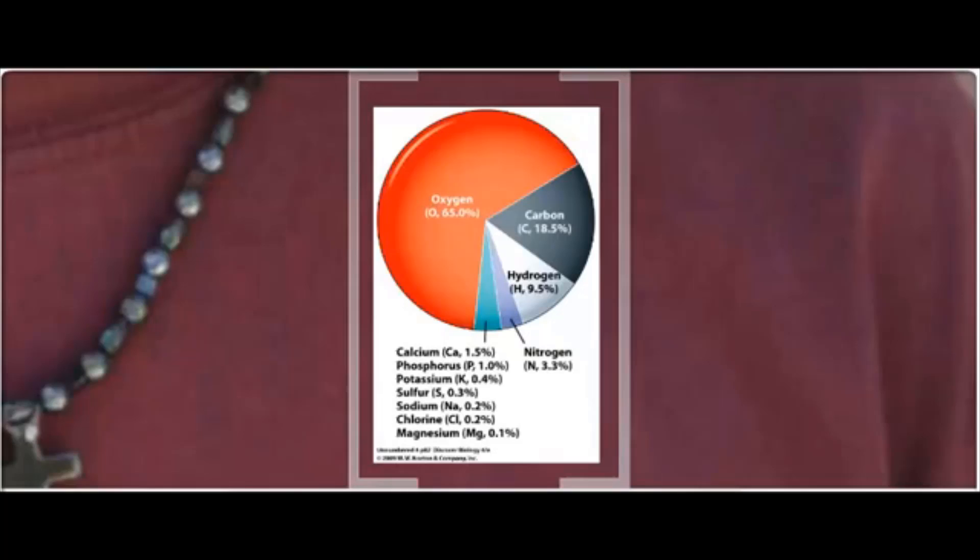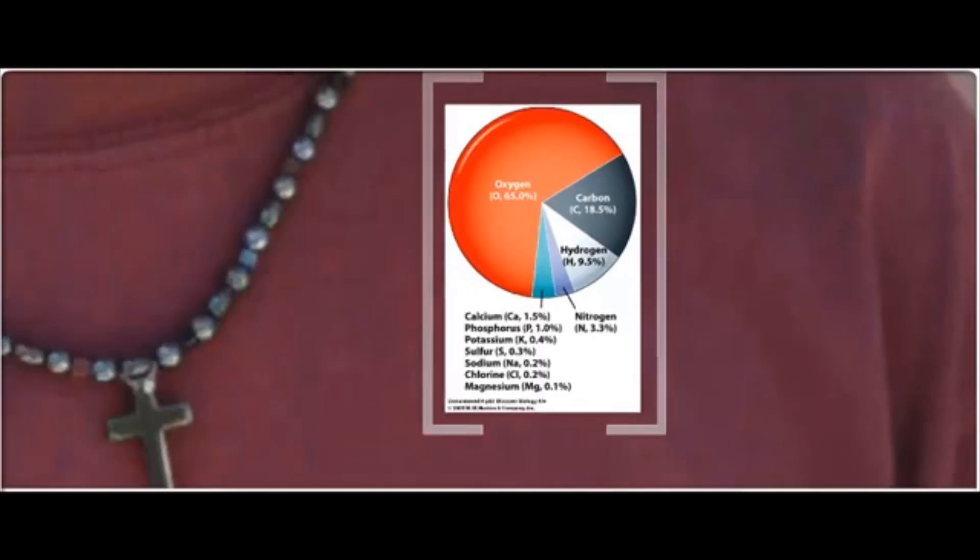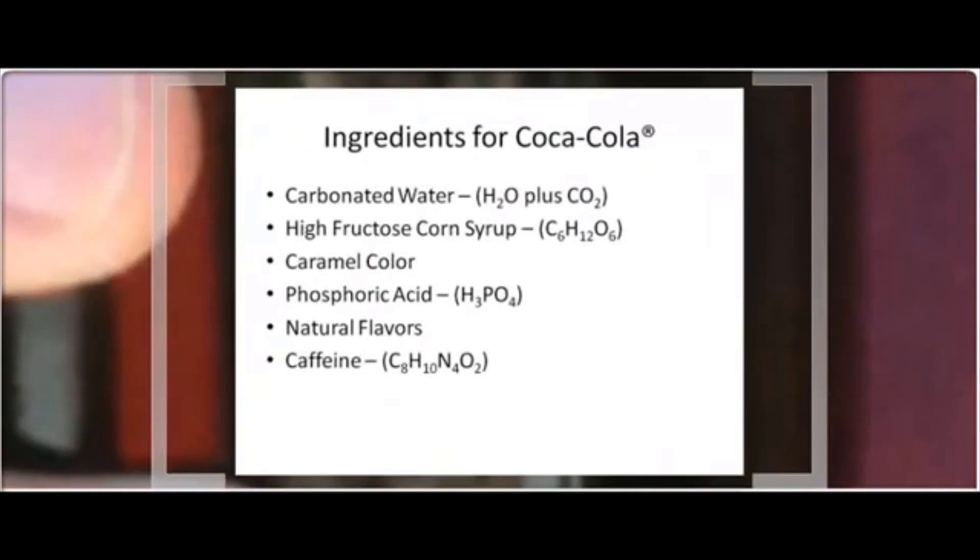We have learned that atoms have different atomic numbers and different mass numbers. Now, if we compare this to something that is not living, such as Coca-Cola, we see many of these same elements in the ingredients. While the exact recipe is not known to the general public,